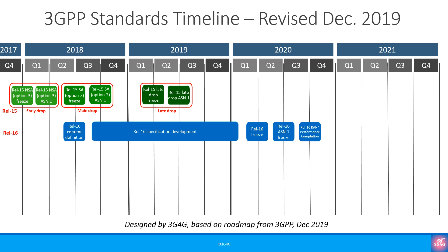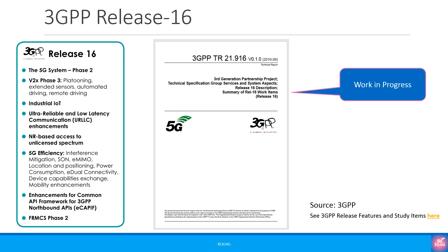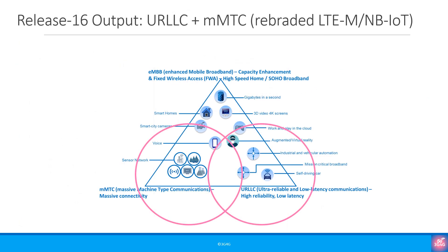3GPP Release 16 is being specified today and is expected to be ready later this year. There is again a long list of features and enhancements coming as part of Release 16, and some of the important ones are listed here. If we put it very simply, 5G Release 16 is focused on URLLC and mMTC.